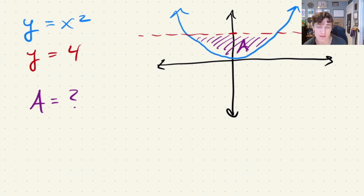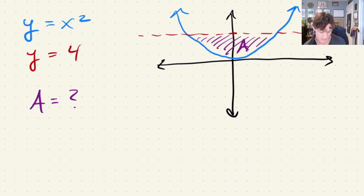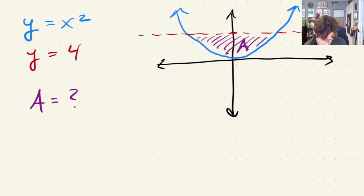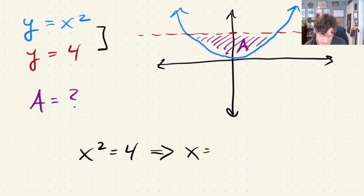I've drawn a graph of the two functions: y equals x squared and y equals 4. They intersect at two points, creating a shaded region A — that's what we're looking for. To find the intersection, we set the functions equal. These are quite trivial — you could see that plugging in ±2 into x squared gives 4 — but in general we set x squared equal to 4, giving x equals ±√4, which is ±2.